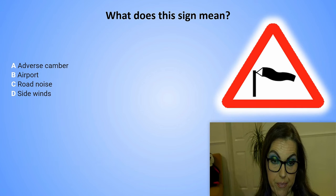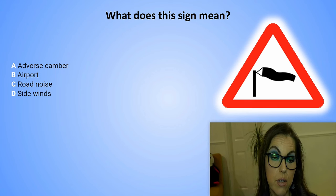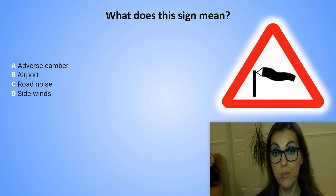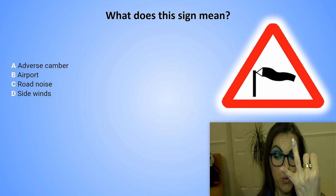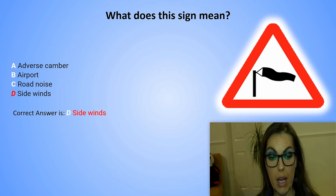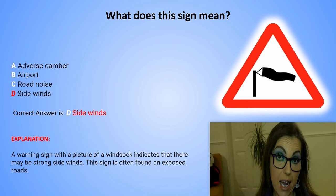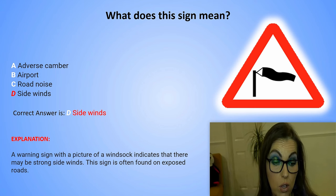What does this sign mean? A. Adverse camber. B. Airport. C. Road noise. Or D. Side winds. The correct answer is D. Side winds. Explanation: A warning sign with a picture of a windsock indicates that there may be strong side winds. This sign is often found on exposed roads.